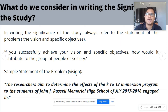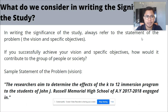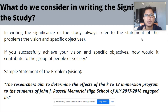There are some things to consider in writing the significance of the study. You should always refer to the statement of the problem that you created. In the past week, we discussed and accomplished the vision, the issue statement, the procedures, and the specific objectives of your research paper. So if you successfully achieve your vision and specific objectives, how would it contribute to the group of people or society?